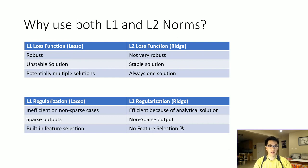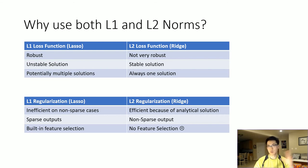There's also a really nice built-in feature selection for lasso, where you assign a zero to each of your features, effectively removing those features from your model, so you can easily interpret what your model is.